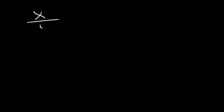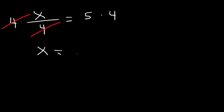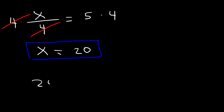Let's say that x divided by 4 is equal to 5. What is the value of x? In order to solve this, we need to get rid of the 4. Since x is divided by 4, we perform the opposite — multiplication. So we multiply both sides by 4. 4 divided by 4 is 1, so on the left we get x, and on the right we have 5 times 4, which is 20. To verify: 20 divided by 4 is indeed equal to 5.